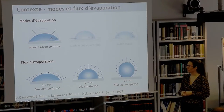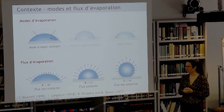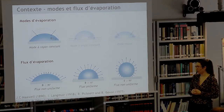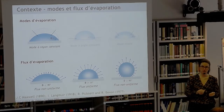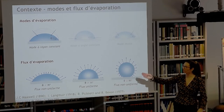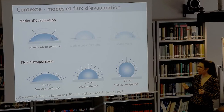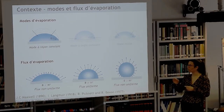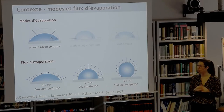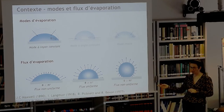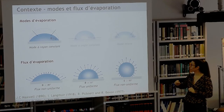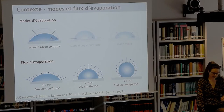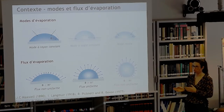Pour caractériser l'évaporation, on peut donner une équation du flux d'évaporation sur l'interface de la goutte. Ce flux a été caractérisé par Maxwell par analogie avec l'électrostatique, puis par Langmuir par analogie avec la chaleur. Pour une goutte sessile, le flux dépend de l'angle de contact θ. Si θ < 90°, le flux est non uniforme et plus important au bord qu'au sommet. À θ = 90°, le flux est uniforme. Si θ > 90°, le flux est à nouveau non uniforme mais plus important au sommet. Dans la thèse, on considère des angles entre 0 et 90°.